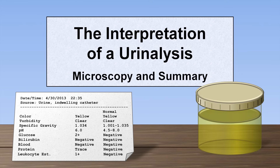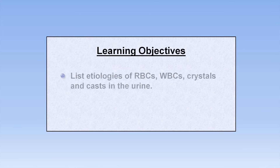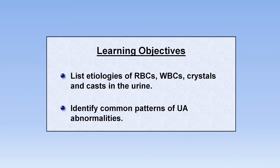This is the final part of the three-part series on interpreting the UA. The focus will be microscopy, and at the end I'll tie it back together with parts 1 and 2 when discussing some common patterns of UA abnormalities in different types of renal disease. The learning objectives are to be able to list causes of red blood cells, white blood cells, crystals, and casts in the urine, and to identify common patterns of UA abnormalities.